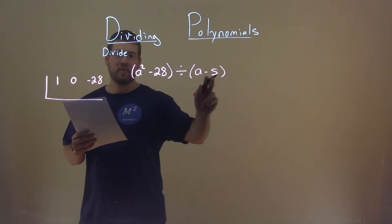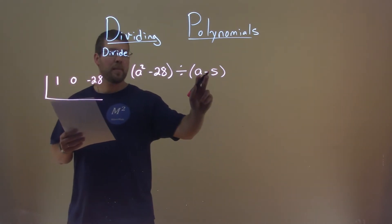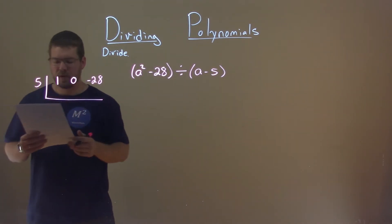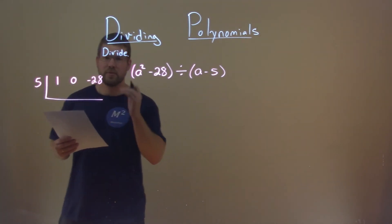We have a minus 5 we're dividing it by, so opposite of minus 5 is a positive 5. And now, we're set up to do division, or synthetic division.